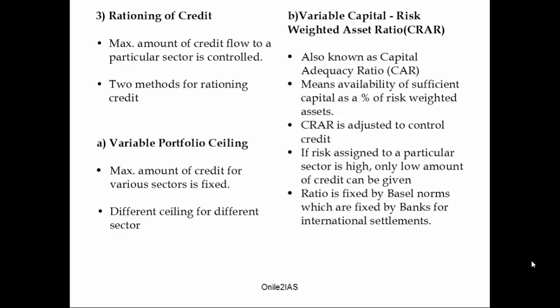The third one is rationing of credit. Here the RBI rations credit flow to different sectors. There are two methods. The first is variable portfolio ceiling — RBI sets a maximum amount of credit that can be lent to various sectors, with different ceilings set for different sectors. The second method is variable capital to risk weighted asset ratio, also known as capital adequacy ratio. It means the availability of sufficient capital as a percentage of risk weighted assets. Banks' balance sheets have an asset side and a liability side.